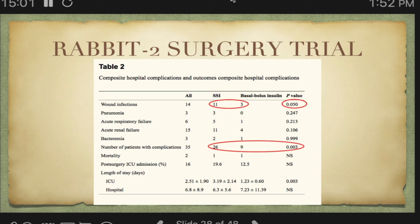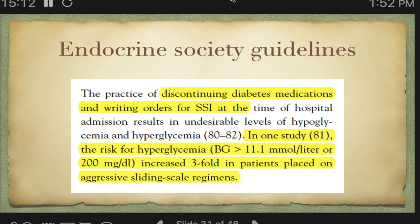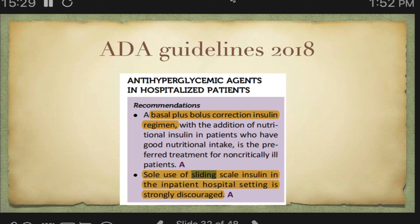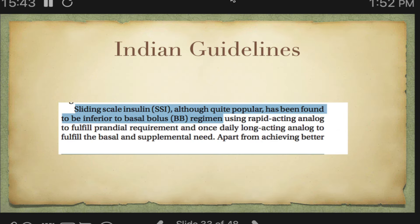There is also the RABBIT II surgery trial for surgical patients, with similar findings. Guidelines are clear — the Endocrine Society states that discontinuing diabetes medications and writing SSI (sliding scale insulin) in hospital is undesirable. One study showed the risk of hypoglycemia increased three-fold in patients on sliding scale insulin. The American Diabetes Association 2018 guidelines state that the sole use of sliding scale insulin in the inpatient setting is strongly discouraged. Indian guidelines also state that sliding scale insulin, although popular, has been found to be inferior to basal bolus insulin.